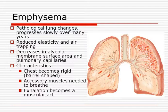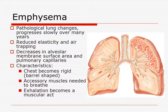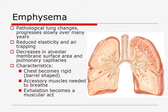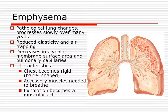For emphysema, there are pathological lung changes that progress slowly over many years. They have reduced elasticity and air trapping, which decreases alveolar membrane surface area and pulmonary capillaries. Their chest may become rigid — that's why they call it barrel chest — because their ribs are expanding to increase room as the lungs lose elasticity. They'll use accessory muscles to breathe, and exhalation becomes a muscular act as they try to push air out. With weak chest wall muscles, expelling air becomes very difficult.